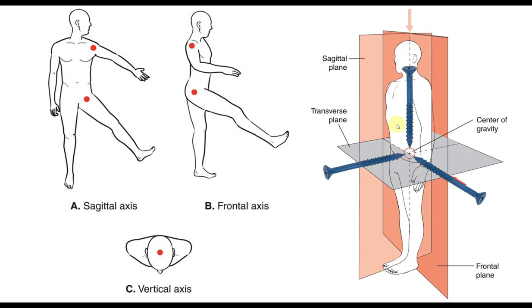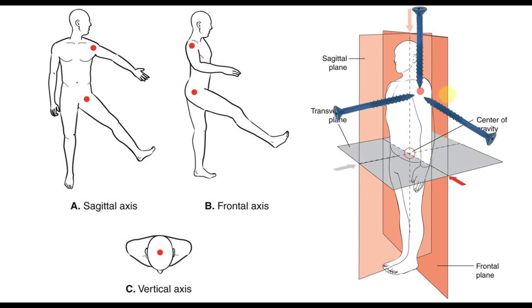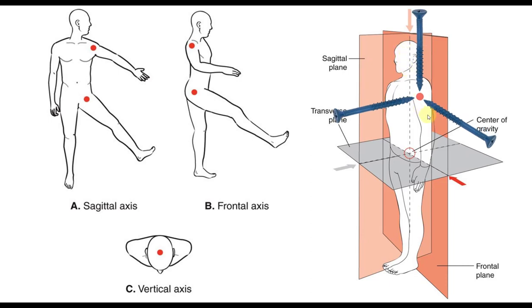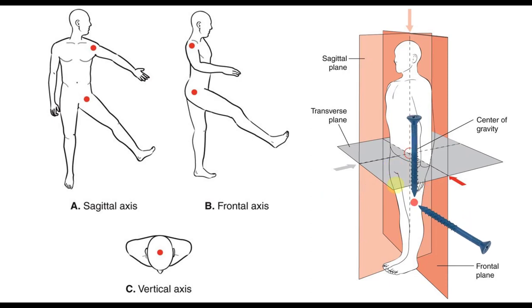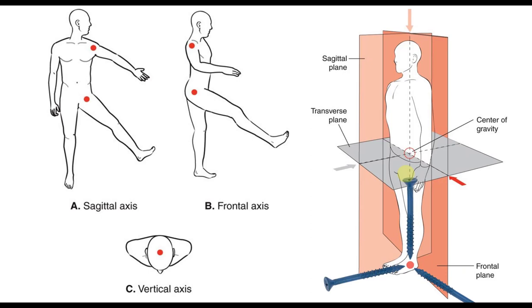The axis of rotation is always perpendicular — 90 degrees — to its particular plane. This is viewed from the center of mass using anatomical position as our reference, but it applies at every single joint. At the shoulder, with three degrees of freedom, three axes allow movement in three planes. The hip also has three degrees of freedom: flexion/extension in the sagittal plane, abduction/adduction in the frontal plane, and internal/external rotation in the transverse plane. The knee has two degrees of freedom — a longitudinal and medial-lateral axis. The elbow has one degree of freedom.